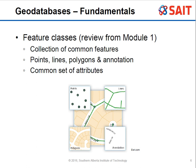As a review from Module 1, a feature class is a collection of common features — a certain type of point is all together in one feature class, certain polygons in another, annotations in another. Each feature class has a common set of attributes. For example, a feature class of trees would have attributes like name, age, canopy height, and canopy width — all features in that class share that same attribute structure.